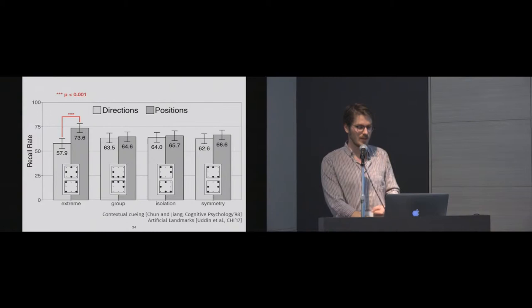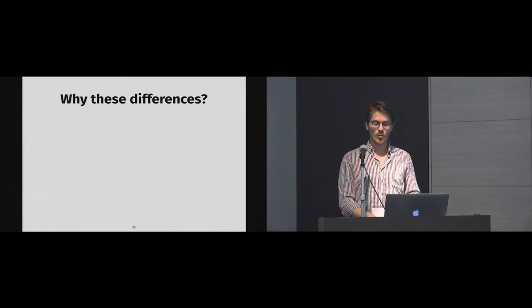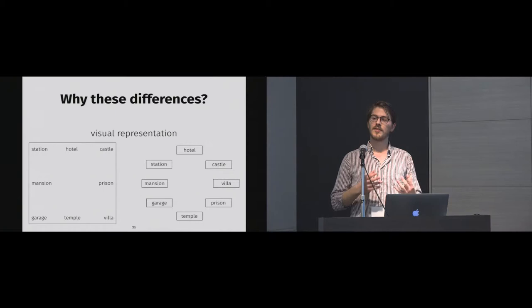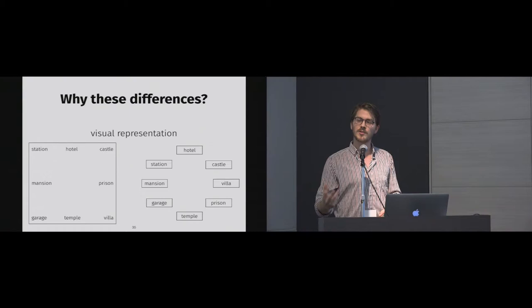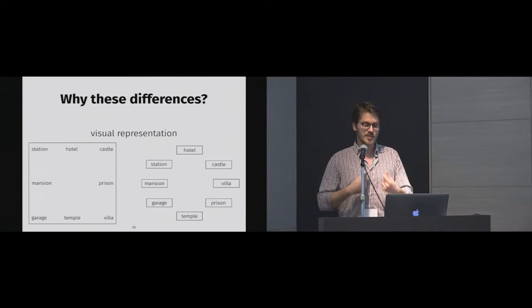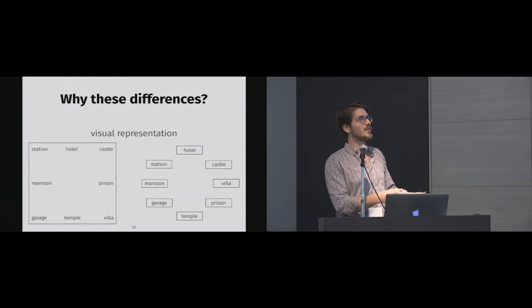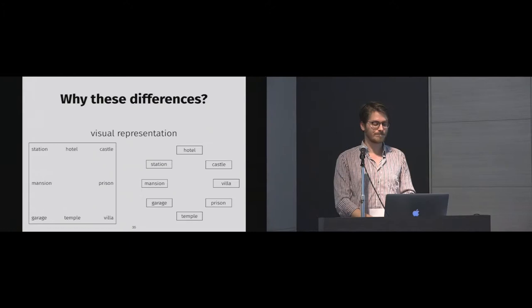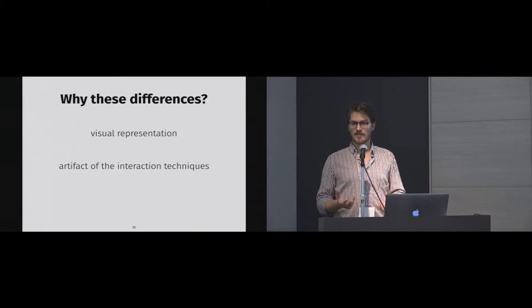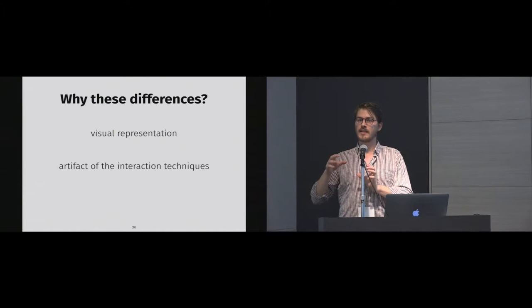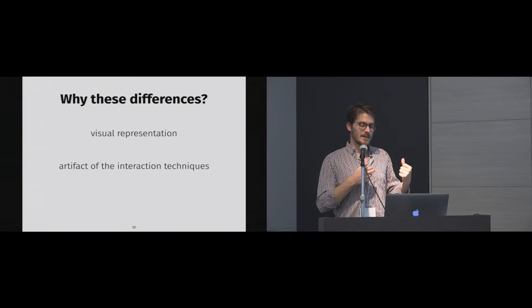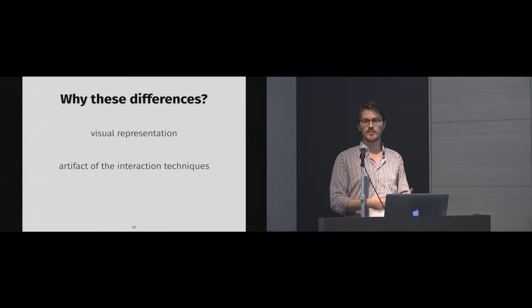How can we explain these differences between the two conditions? First, the two conditions used different visual representations: positions used a rectangular layout, while directions used a circular one. The rectangular representation might help participants create and rely on landmarks. A second explanation is that we compared two interaction techniques, not purely positions and directions — so artifacts of the technique, such as the gesture required for selection, could also have an impact on memorization.